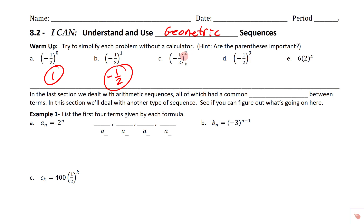Because there are parentheses and the exponent is two, there are two negatives, and a negative times a negative is a positive. We get one squared on top and two squared on the bottom, so the answer is positive one fourth. Then negative one half raised to the third power gives us three negatives — that's a negative — one cubed is one on top, and two cubed is two times two times two, which is eight on the bottom.